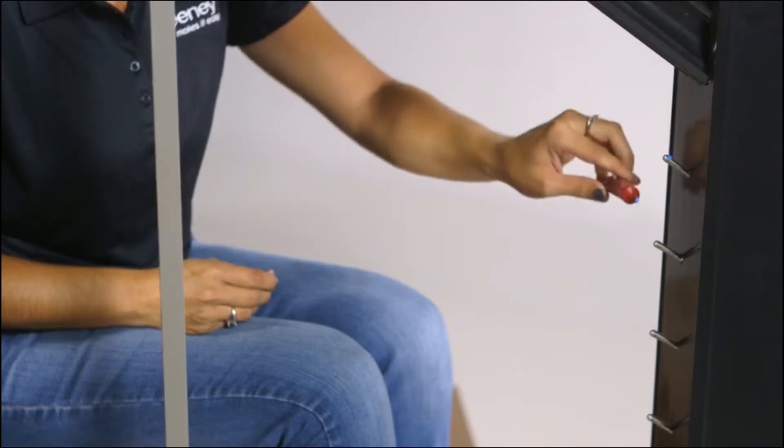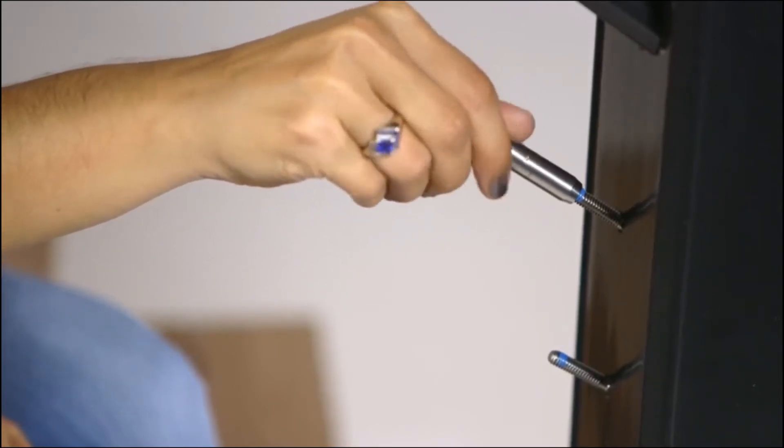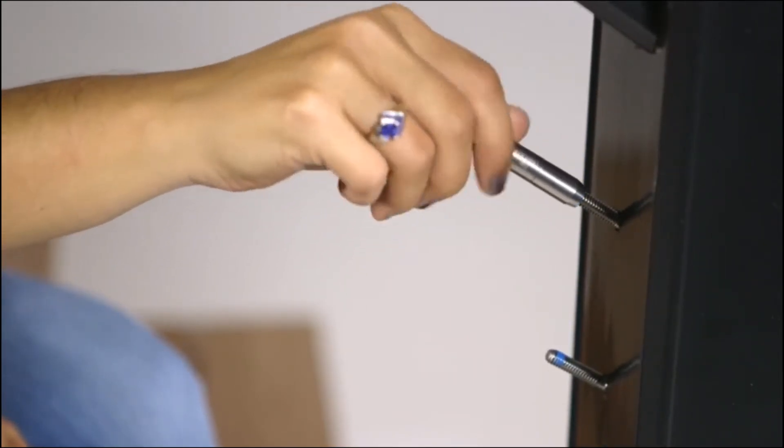Apply a drop or two of high strength thread locking compound to the threads. Spin the Quick Connect lag fitting onto the hanger bolt until it bottoms out.